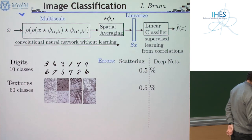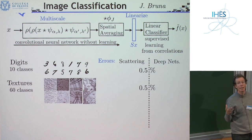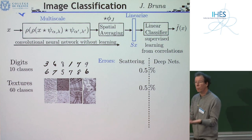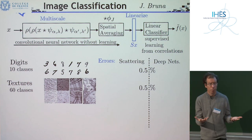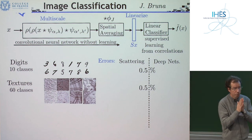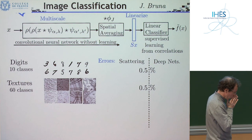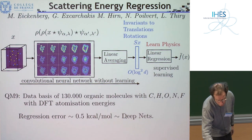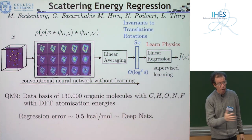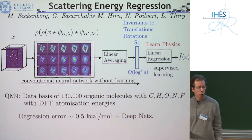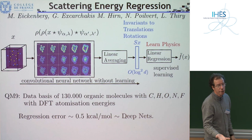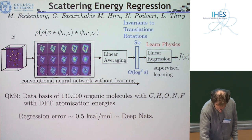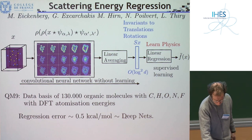When we don't learn the filters—we just say we know some regularity properties so the math leads to certain filters—you get an error of the same order. When learning everything with a deep net you get an error of about 0.5 kcal/mol. When you don't learn anything but use wavelets adapted to the kind of transformation where you want invariance, you get an error of the same order. In that kind of case, the network is in fact smaller because you know exactly what you want. What is learned is the type of regularity; the filters can be replaced with wavelets, and the only thing you need to learn is the linear weights at the output.